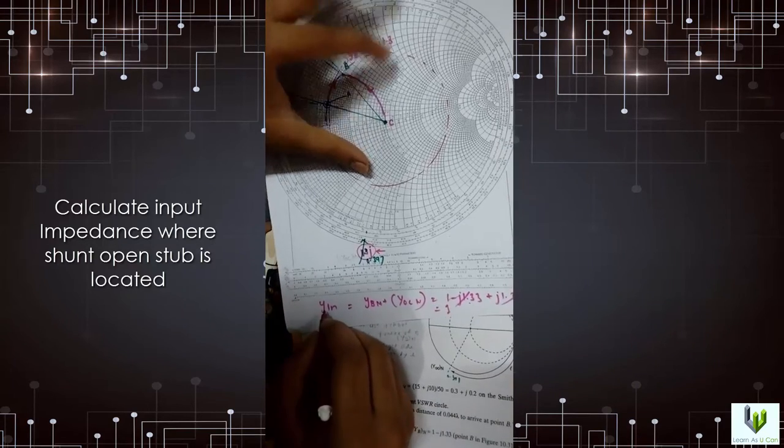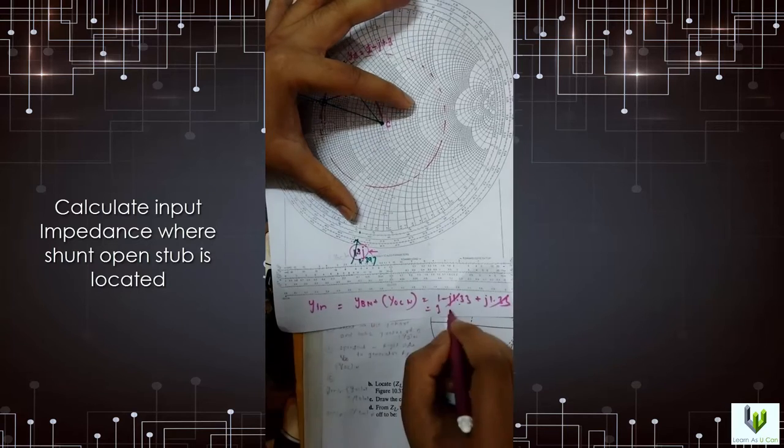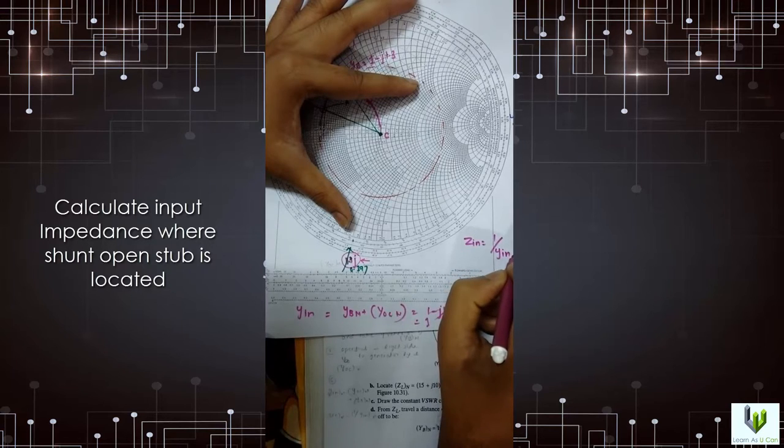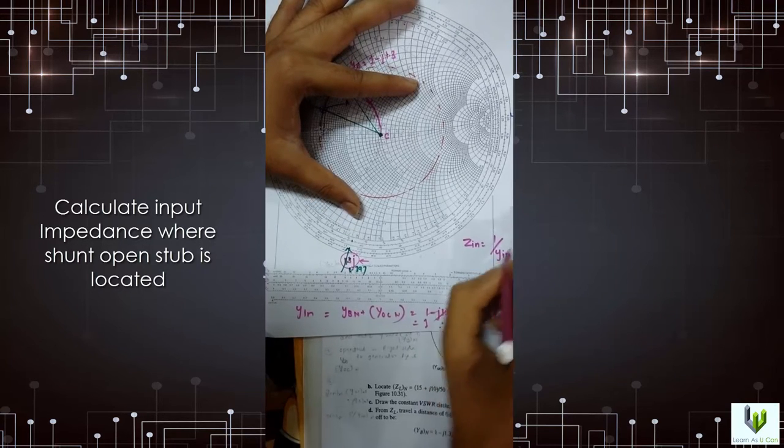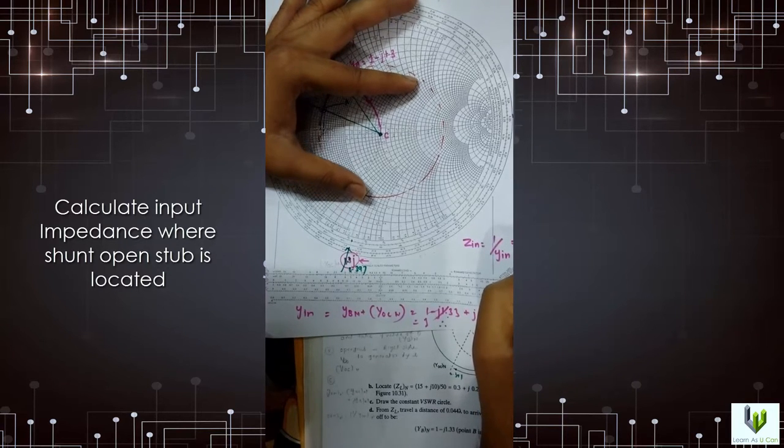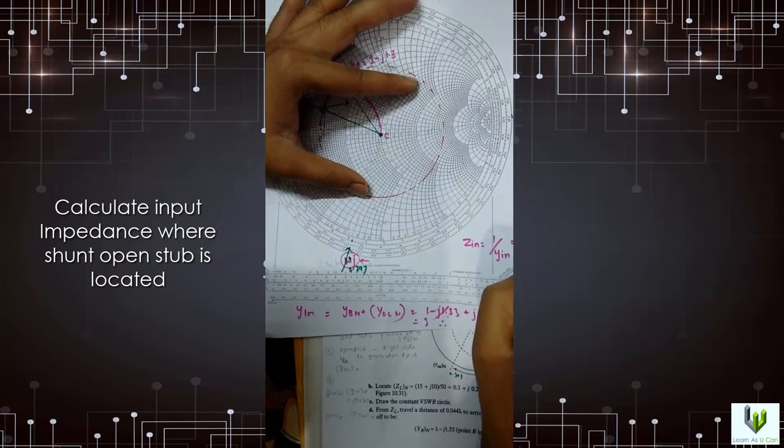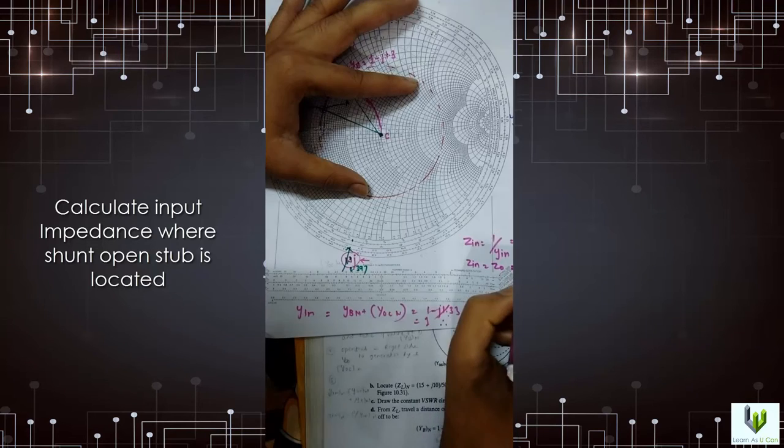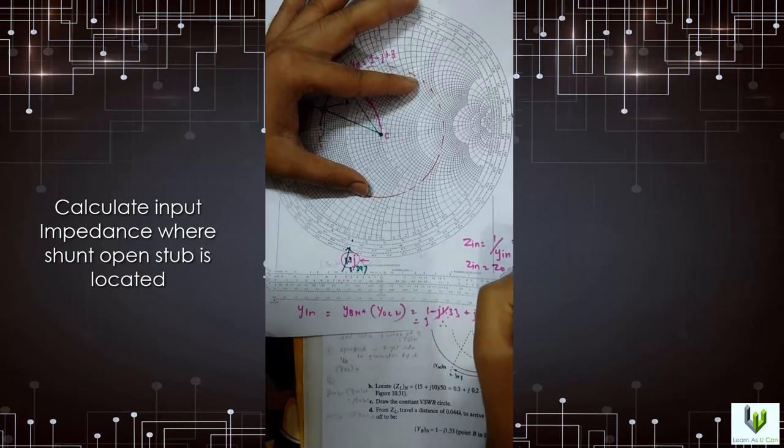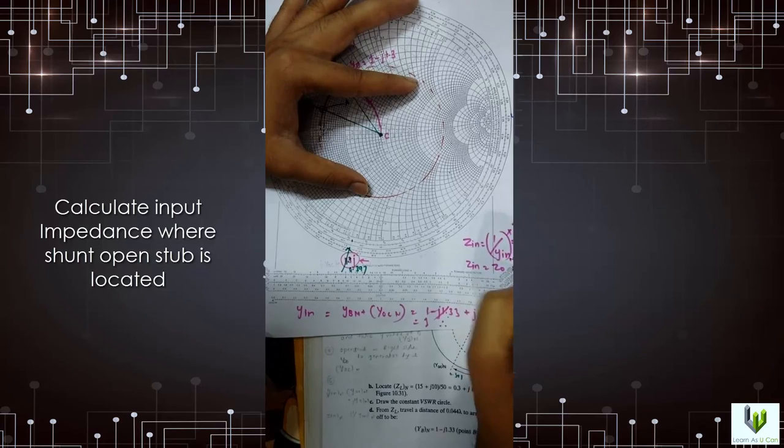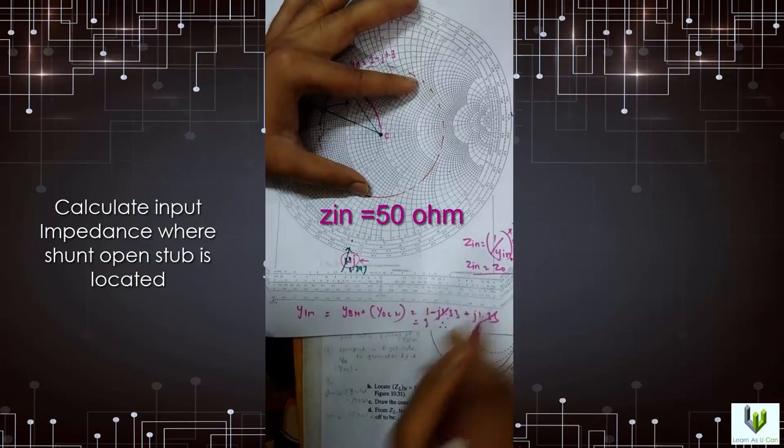One, Yin is equal to 1. Therefore, Zin is equal to 1 by Yin. And this is 1 by Yin. Zin is equal to 50 ohm. 50 ohm is the answer.